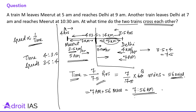So the trains cross each other 56 minutes after 7 AM, which is 7:56 AM. This was a good question where the distance between the two stations was not given, so we had to derive it using the concept that time is inversely proportional to speed. These types of questions are expected in competitive exams like CSAT.